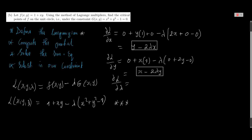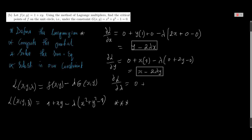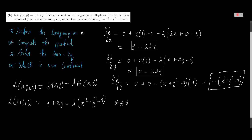Lastly, the partial derivative with respect to λ: differentiating 1 gives zero, differentiating xy gives zero. We keep x² + y² − 1 constant and differentiate λ, which gives 1. So the result is −(x² + y² − 1). Those are the three partial derivatives.